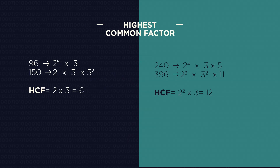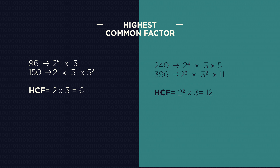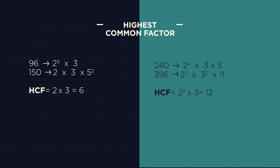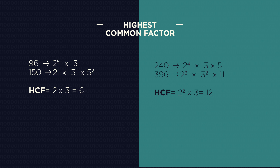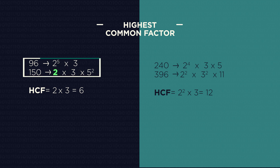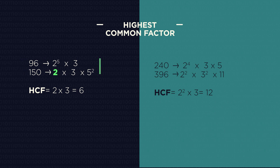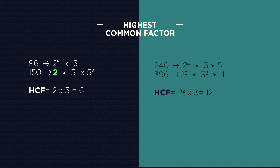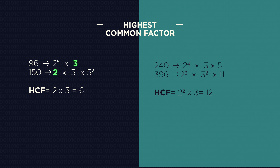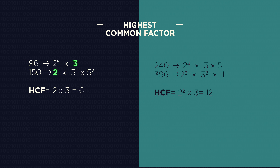Can you see what's happening this time? We only take what is common to both lists. So 150 only has one 2, so that's what we can take, and 96 only has one 3, and that's all they have in common.